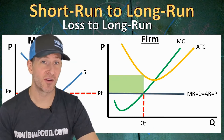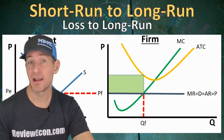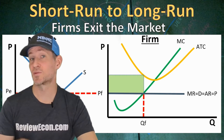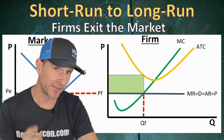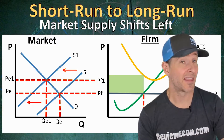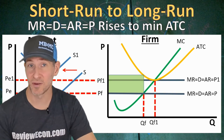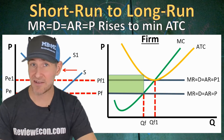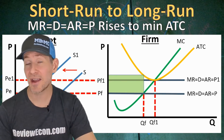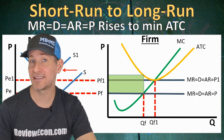Next, let's take a look at what happens when a firm is earning economic losses. That economic loss will only be a short-run situation because in the long run, firms are going to flee the economic loss. Some of those firms will exit the market — not in the short run, but in the long run. And that will cause a leftward shift of the market supply curve. That increases the price and decreases the quantity in the market, and that increases the firm's marginal revenue, demand, average revenue, and price. It causes them to produce a higher MR equals MC quantity, and we now produce at the minimum of the average total cost curve, which means the firm breaks even in the long run.